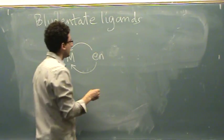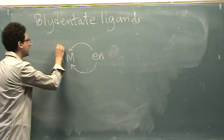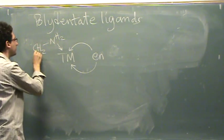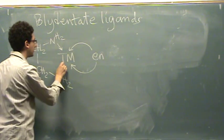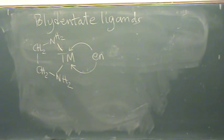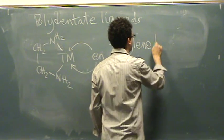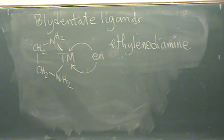En is the shorthand notation for what it actually is. I'll draw it out first. It actually is this: NH2, CH2, CH2, NH2. So it bites on in two places. So both nitrogens bond. It makes a little ring structure. That's En. It stands for ethylenediamine.